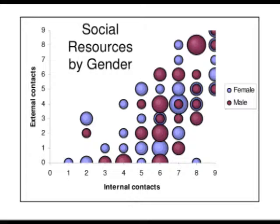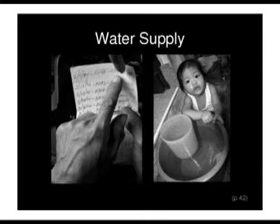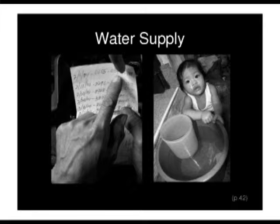Female and male have similar access to social resources, both internal and external. The external cluster is more important as a scale because it forms a more reliable measure. To show the relevance of access to resources for slum well-being — or in some cases survival — we looked at the relationship of measurement on this scale and access to potable water.